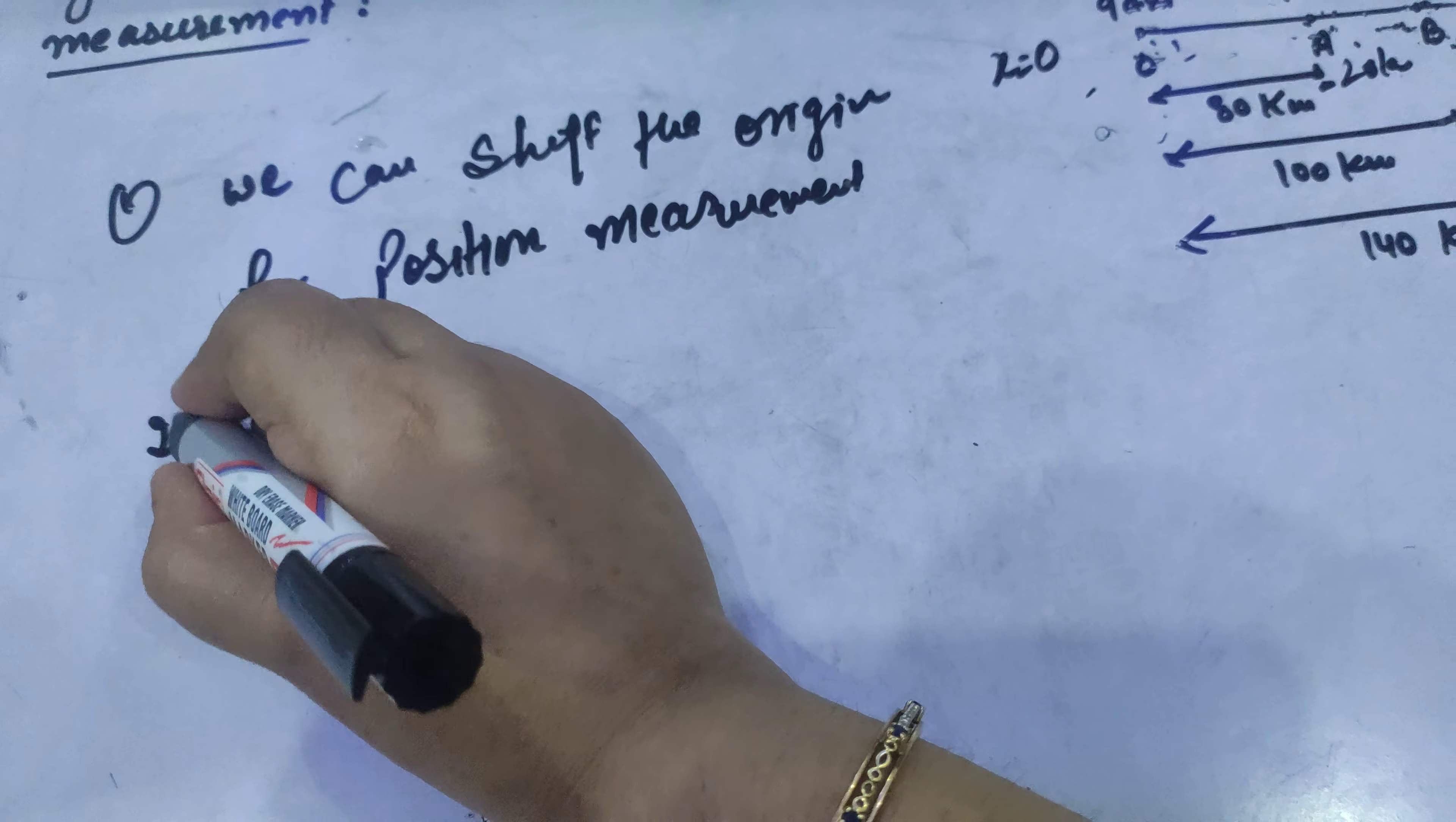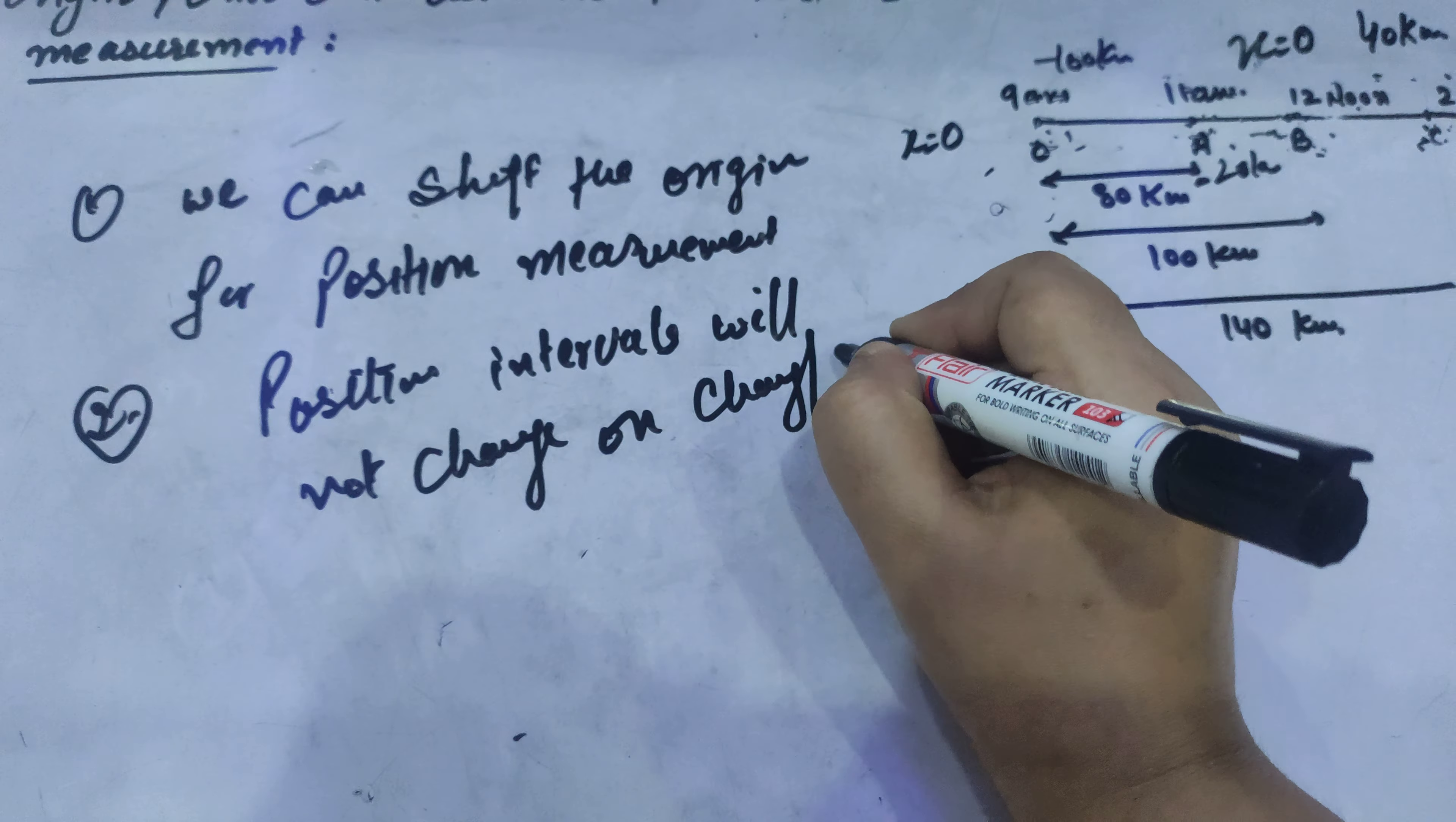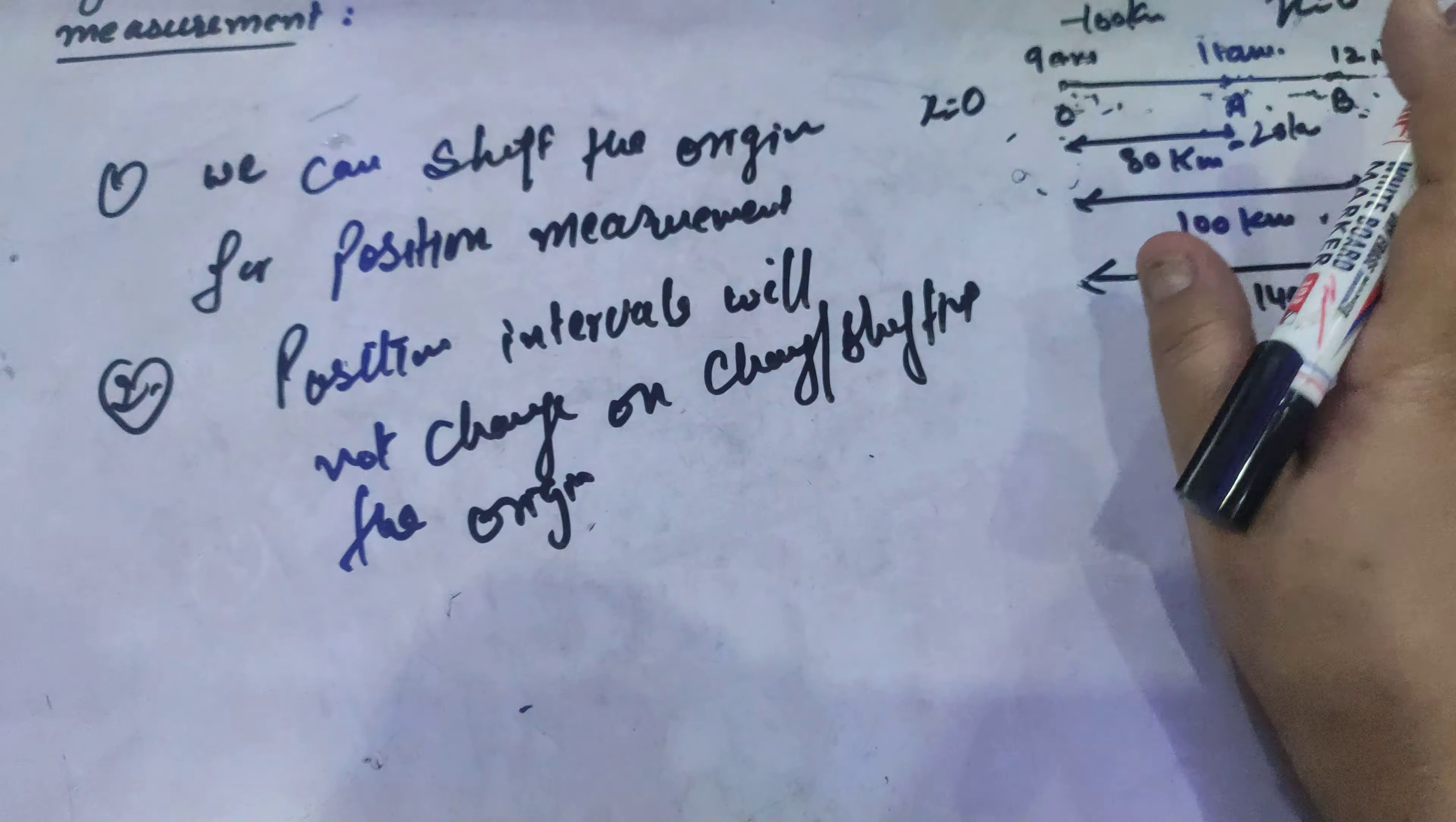Number 2, shifting does not make the difference between the intervals. The position intervals will not change on changing or shifting the origin. Clearly the difference between them will remain same. Initially it was 80 km and if the origin is shifted here it is 80 km. And the difference between 2 is 100 km. If it is shifted it is 100 km. So intervals will not change.